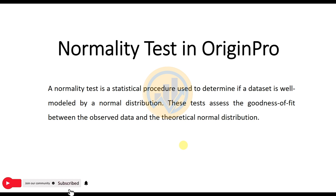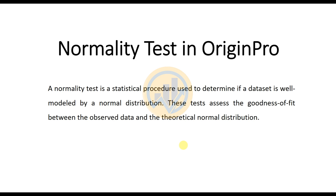Now we will discuss the topic: how to calculate a normality test in OriginPro software. What is the normality test? A normality test is a statistical procedure used to determine if a data set is well modeled by a normal distribution. These tests assess the goodness of fit between the observed data and the theoretical normal distribution.